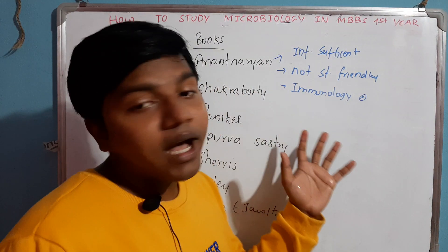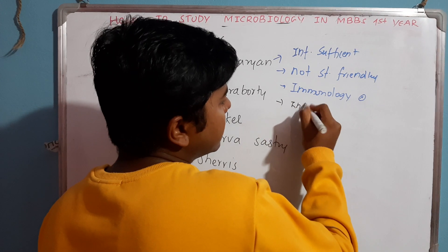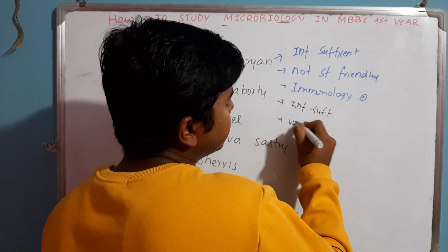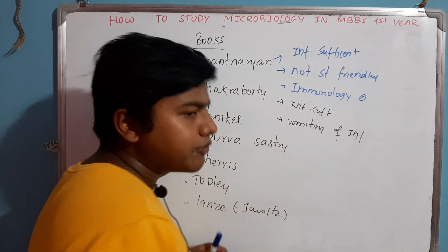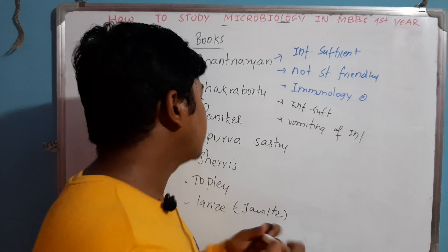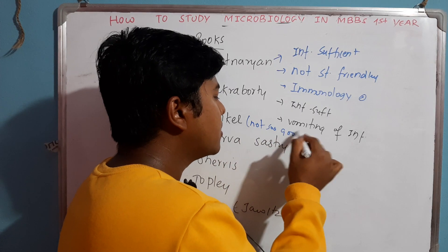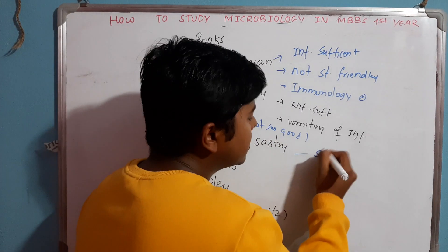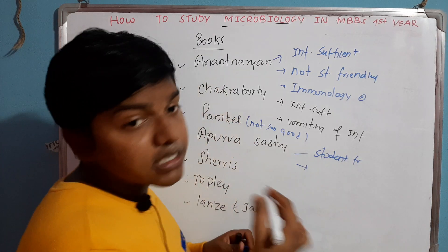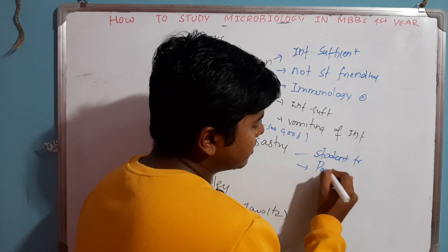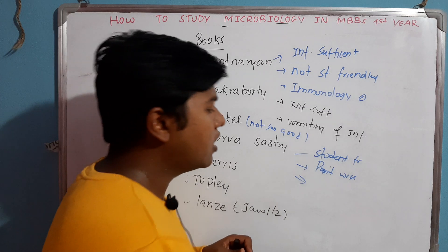Chakrabarti — information is sufficient, but it is a vomiting of information. You can see it is nearly a vomiting of information. Panikar is not so good. Apurva Shastri is student-friendly. If we need to go beyond that, Apurva Shastri is the first student-friendly book.